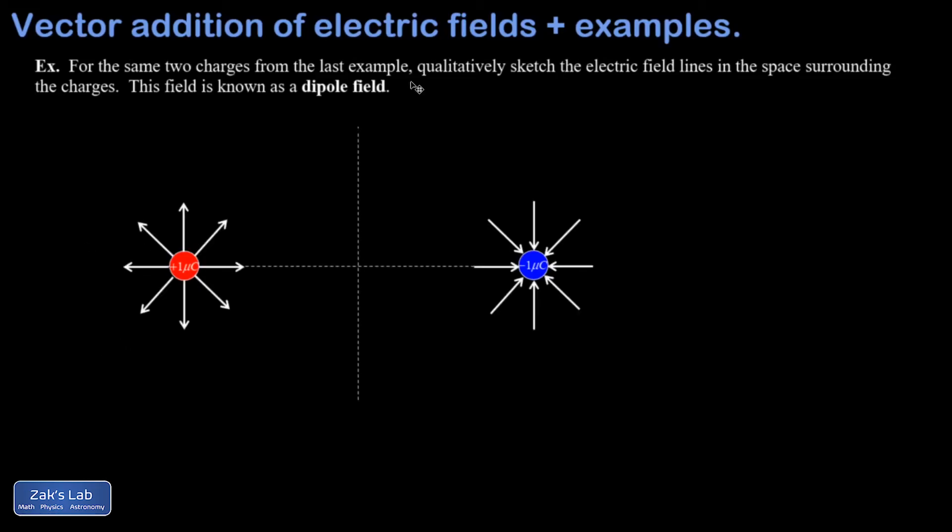Okay, the next part of the argument is to say that along this midline, this dashed vertical line, I have a symmetry situation that makes it so the electric field always points exactly horizontally.